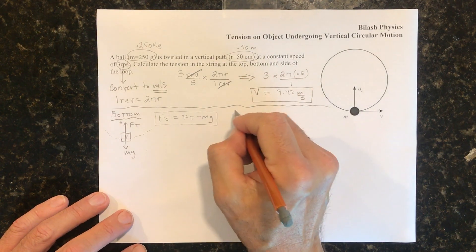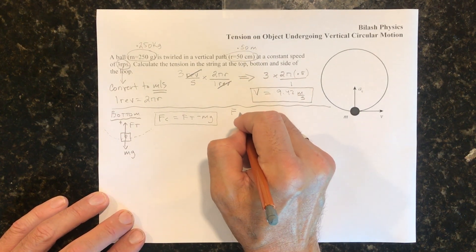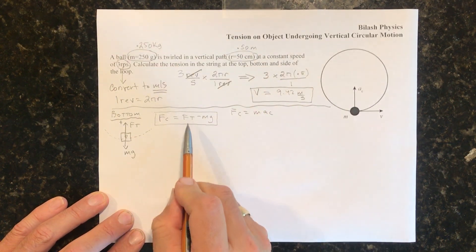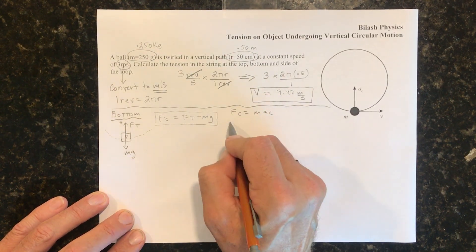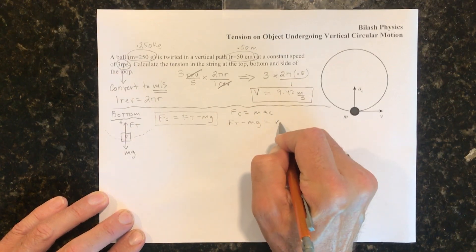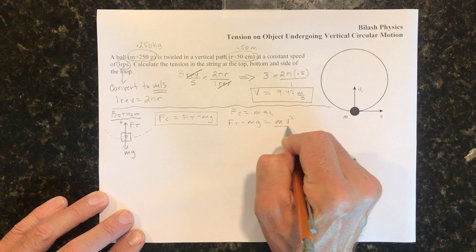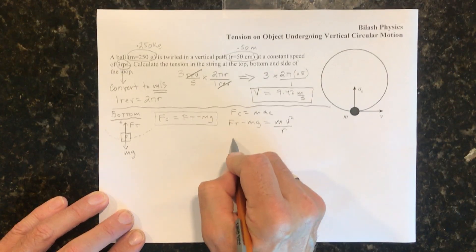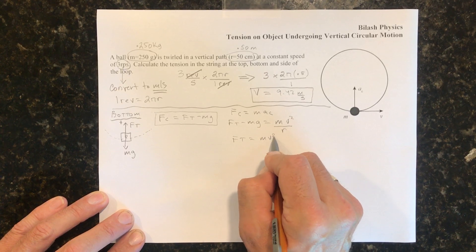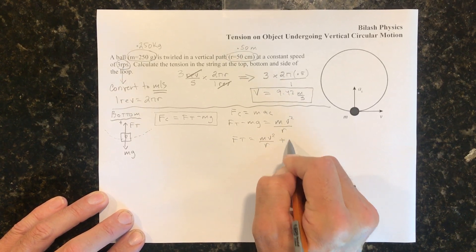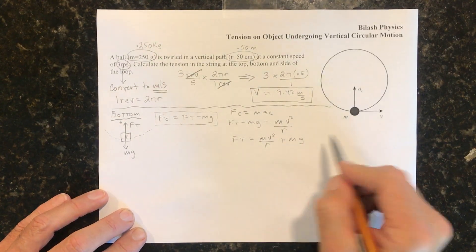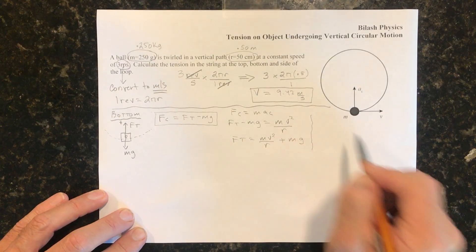So I can write out Newton's second law now. So Fc is equal to mv² over r. So Ft will be equal to mv² over r plus mg.